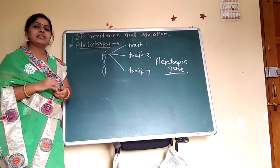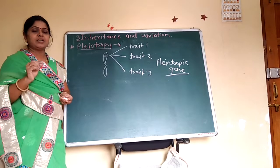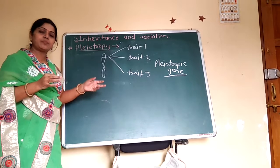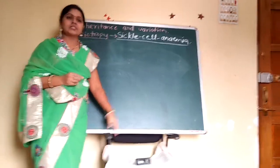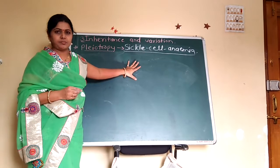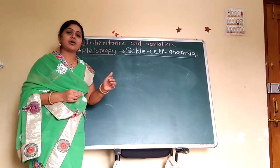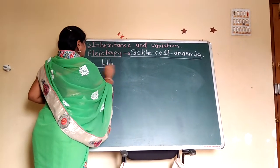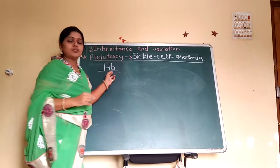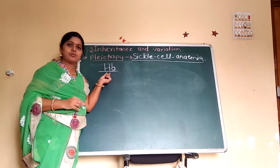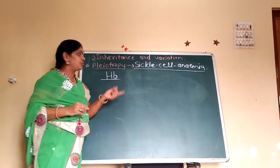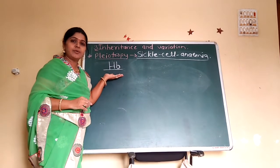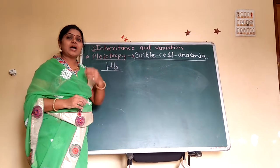Sickle cell anemia in human beings is the most important example of a pleiotropic gene and pleiotropy. Sickle cell anemia is caused because of structural abnormality in the hemoglobin structure. Our hemoglobin becomes structurally abnormal, and as a result, the normal round RBCs become sickle shaped.